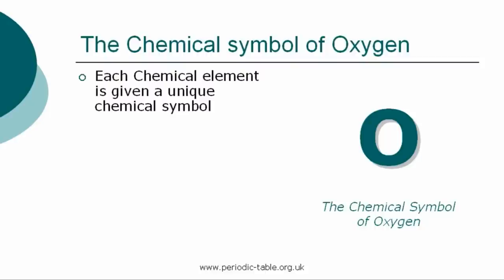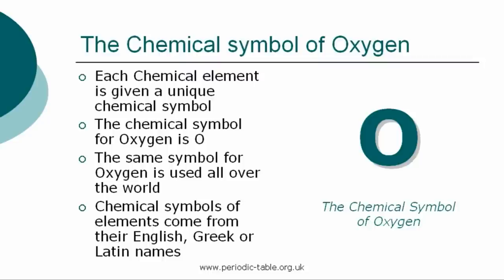Each chemical element is given a unique chemical symbol, which is used all over the world. The chemical symbol for oxygen is O. The chemical symbols of elements come from their English, Greek, or Latin names.